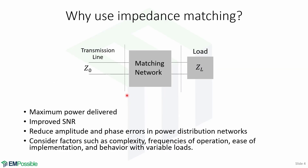The basic idea of impedance matching is shown in this figure, in which a matching network is connected between a transmission line and the load impedance. The matching network is ideally lossless in order to avoid any loss of power, and is usually designed so that the impedance seen into the matching network is equal to the impedance of the transmission line. This means that reflections on the left of the matching network will be eliminated, although reflections between the load impedance and the matching network can occur.